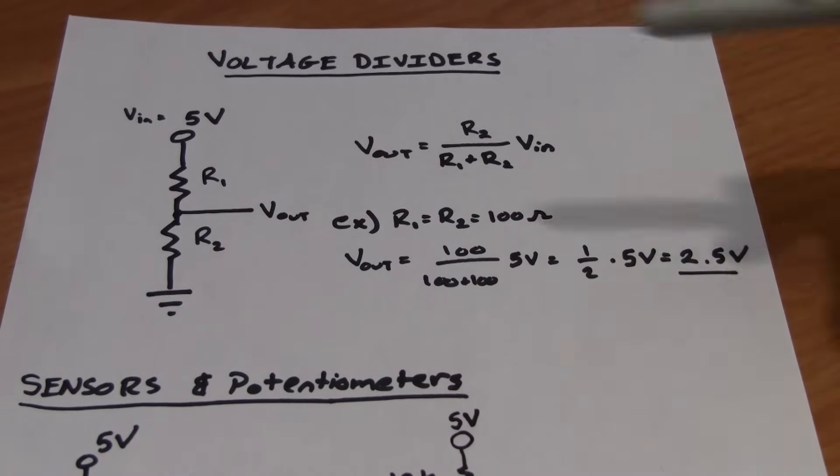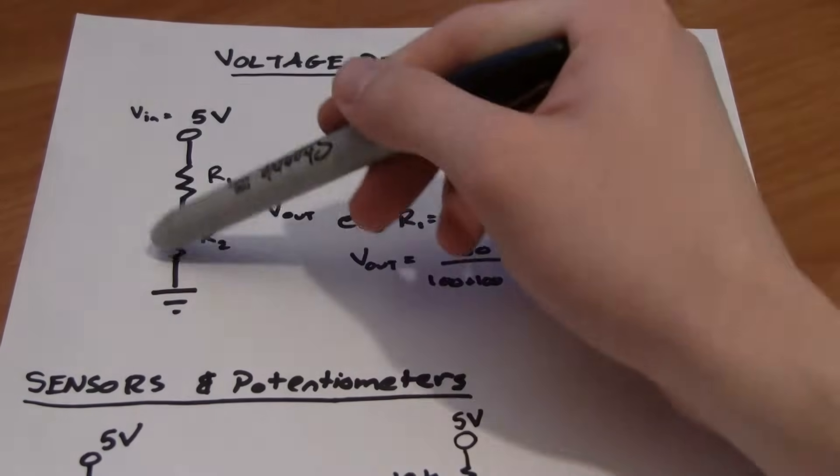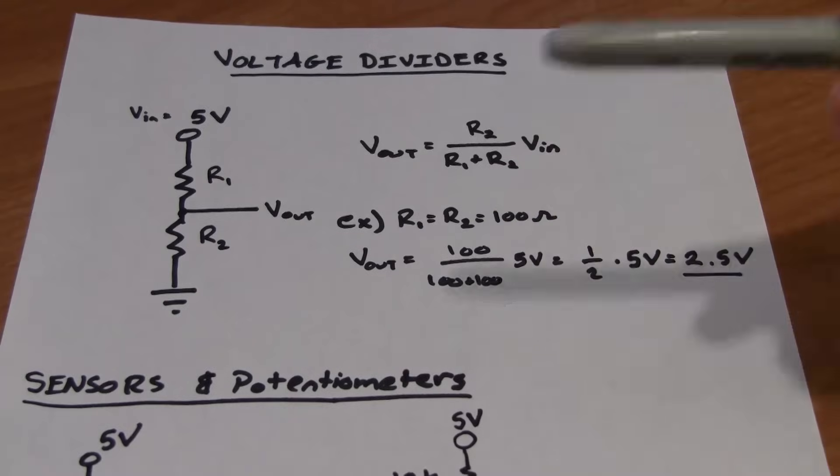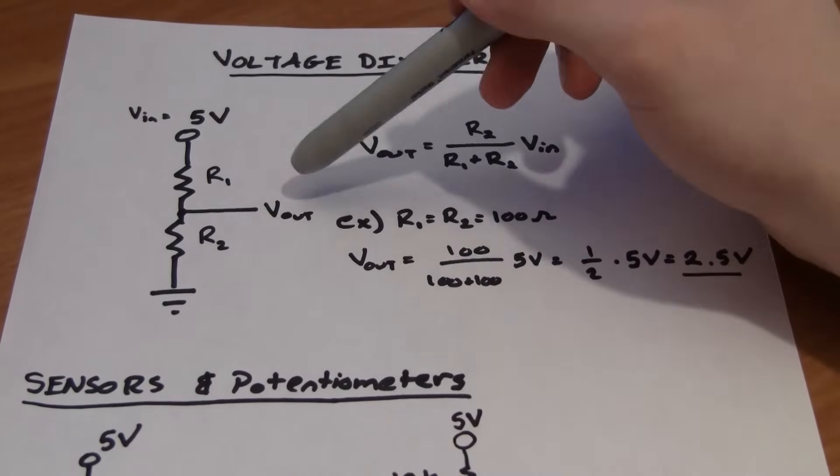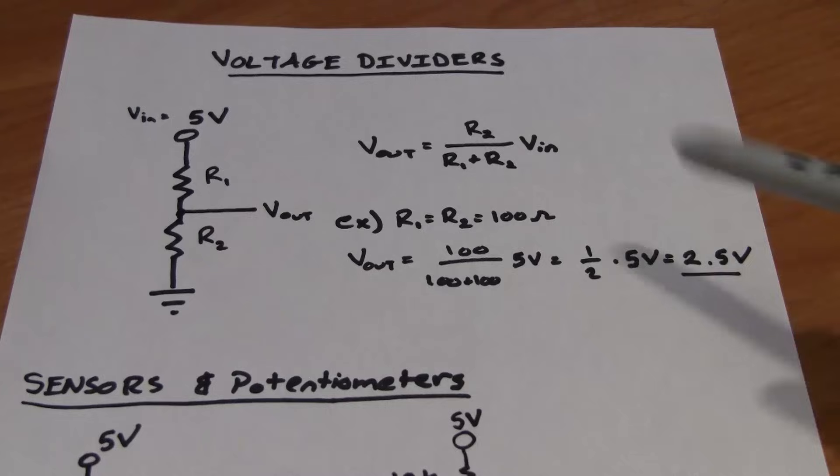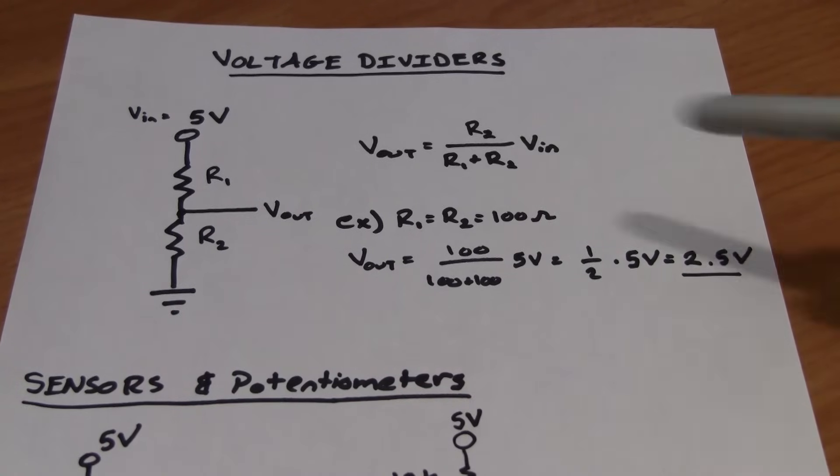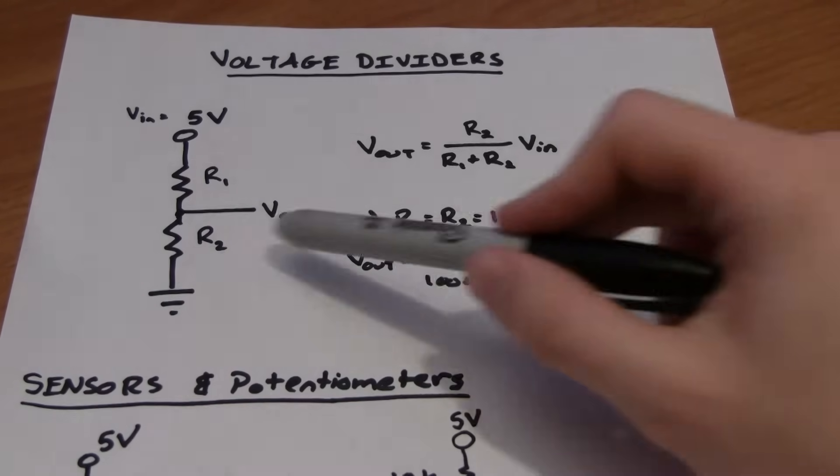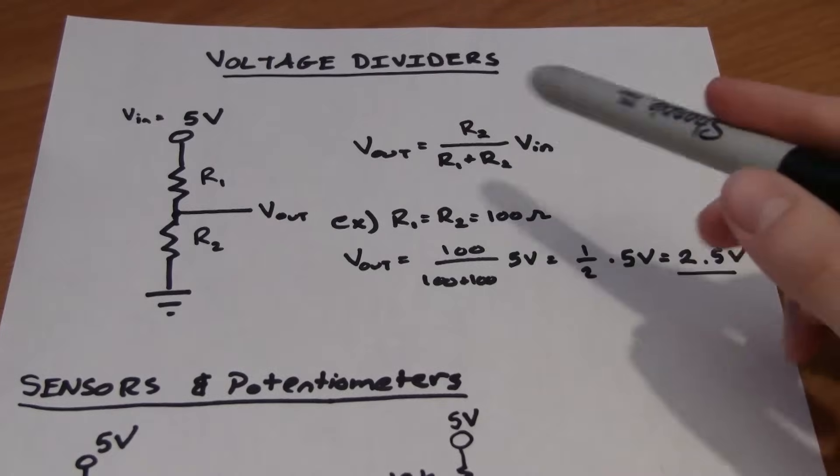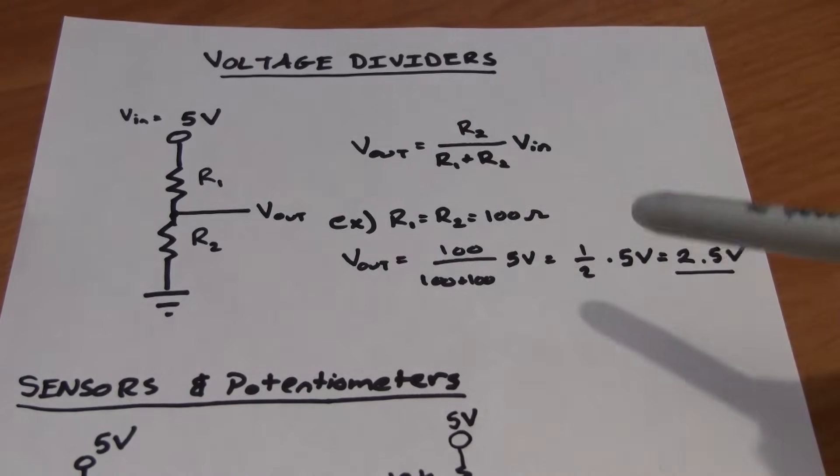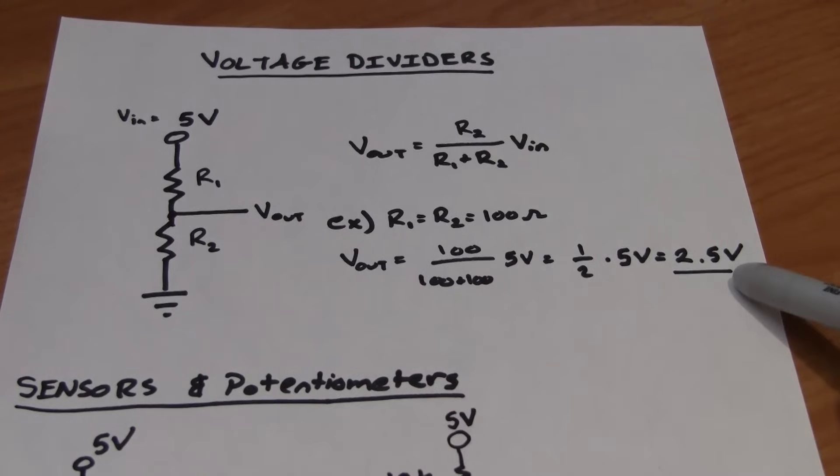So let's talk about an example here. Let's say that we have R1 equals R2 equals 100 ohms. So both of these are 100 ohm resistors. Every time when you have two resistances of the same value in a voltage divider, what you'll find is that the voltage out will end up equaling exactly half of what the original voltage was. Let's see why that is. If we have 100 ohms from R2, and these two are both 100 ohms, that's 200 ohms together, that's 100 over 200, which is one half times 5 volts, the original voltage, which gives us 2.5 volts. Perfect.